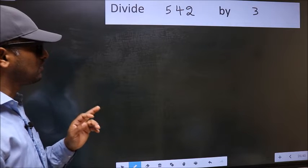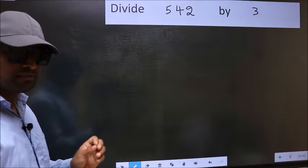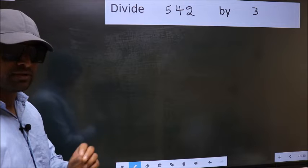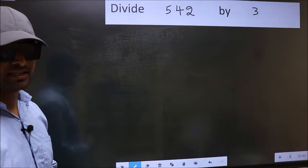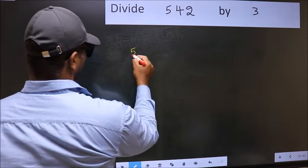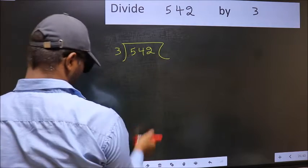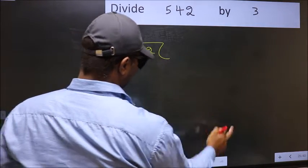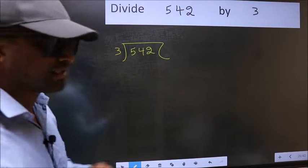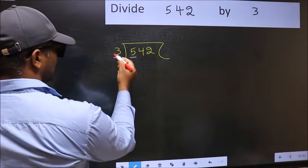Divide 542 by 3. While doing this division, many do this mistake. What is the mistake that they do? I will let you know, but before that we should frame it in this way: 542 and 3 here. This is your step 1. Next, here we have 5 and here 3.